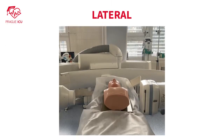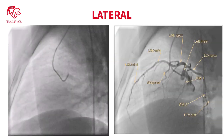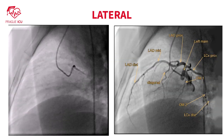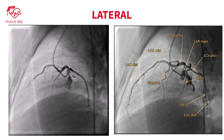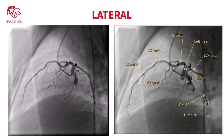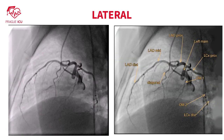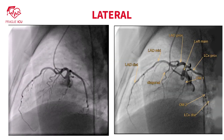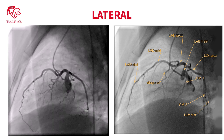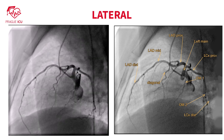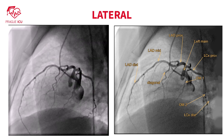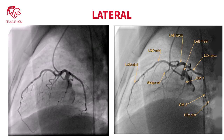Lateral, left anterior oblique 90 degrees view shows the mid LAD and the circumflex artery. Especially surgeons like this view for possible visualization of intramyocardial courses of the LAD.